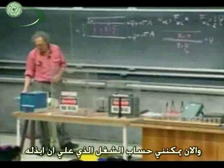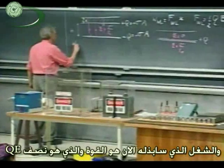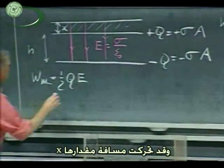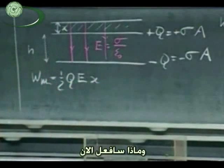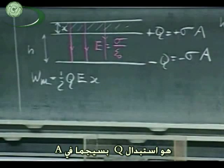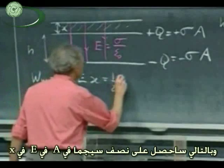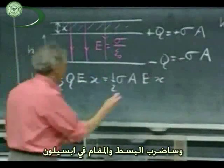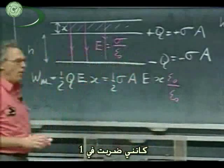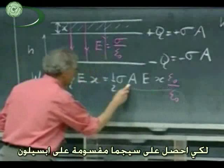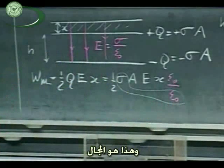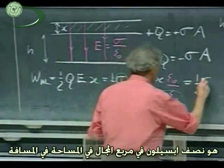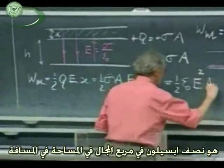So now I can calculate the work that I have to do. The work is my force — which is one half Q times E — moved over a distance X. I can replace Q by sigma A, so I get one half sigma A times E times X. I multiply top and bottom by epsilon zero — that multiplies by one — and the reason I do that is because then I get another sigma divided by epsilon zero, which is E. Therefore the total work that I, Walter Lewin, have to do is one half epsilon zero, E squared, times A, times X.